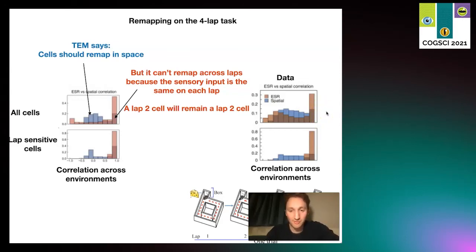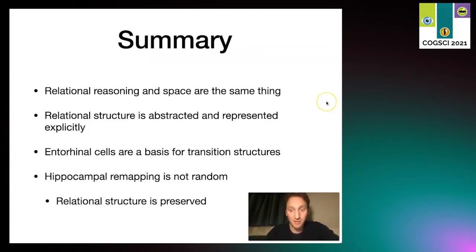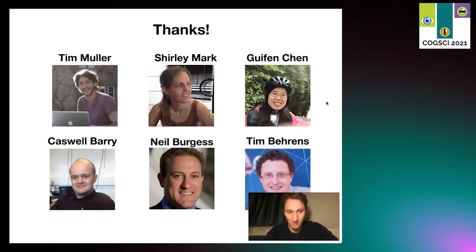That's a bit of a whistle-stop tour. In summary, I hope to convince you that relational reasoning and space are the same thing. In the brain, it's extracting a relational structure and representing it abstractly. These entorhinal cells are a basis for representing transition structures, and hippocampal remapping is not actually random - instead relational structure is preserved. Thank you very much for listening and thank you to all my collaborators.